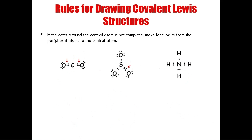When we move those electrons inward, the structures change. A pair of electrons has been moved inward from each oxygen in CO₂ — these oxygens are now sharing more electrons with carbon, creating a double bond. Carbon dioxide has two double bonds, one between each oxygen and the carbon. Sulfur trioxide has one double bond between one of the oxygen atoms and sulfur — it doesn't matter which oxygen. Ammonium has remained unchanged.